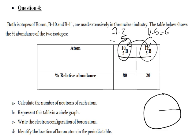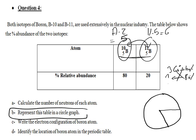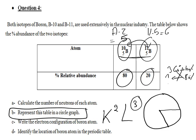The circle represents 360 degrees, which equals 100%. So for 80%, calculate the angle: 360 × 80/100. Do the same for 20%. The electron configuration of boron (Z=5) is K2 L3. Boron has 3 valence electrons, so it is in Group 3. It has 2 energy shells, so it is in Period 2.